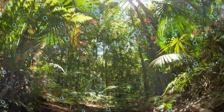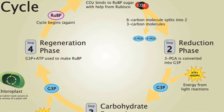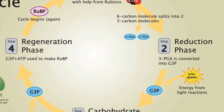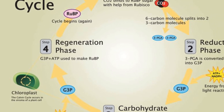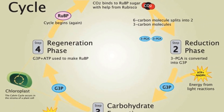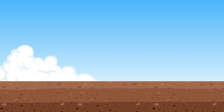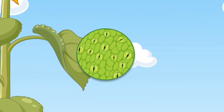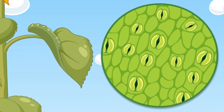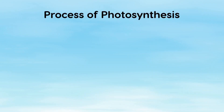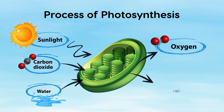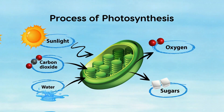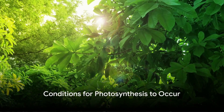The second step is known as the Calvin cycle or dark phase. But don't be fooled by the name — it doesn't need darkness to occur. It's all about carbon dioxide. The plant absorbs carbon dioxide from the atmosphere through tiny holes in the leaves called stomata. This carbon dioxide then combines with the hydrogen freed earlier to form glucose, the plant's food.